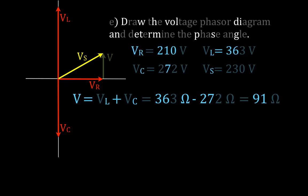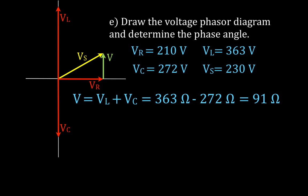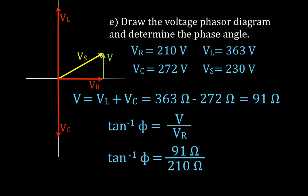Checking the phase angle again using the tangent function: arctan of the opposite over the adjacent — 91 divided by 210 — gives phi equal to 24 degrees, matching our earlier result. This confirms all calculated values are correct.